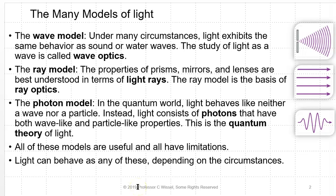Light is really important to us, and we have many models for light. The wave model: under many circumstances, light exhibits the same behaviors as sound or water waves, although it's a completely different type of wave. The study of light as a wave is called wave optics. The ray model, which we talked about in the previous chapters — the properties of prisms, mirrors, and lenses are best understood in terms of light rays, and this is called ray optics. The photon model is a quantum idea, and light behaves like neither a wave nor a particle. Instead, light consists of photons that have both wave-like and particle-like properties, and this is the quantum theory of light. All these models are useful, and all of them have limitations.